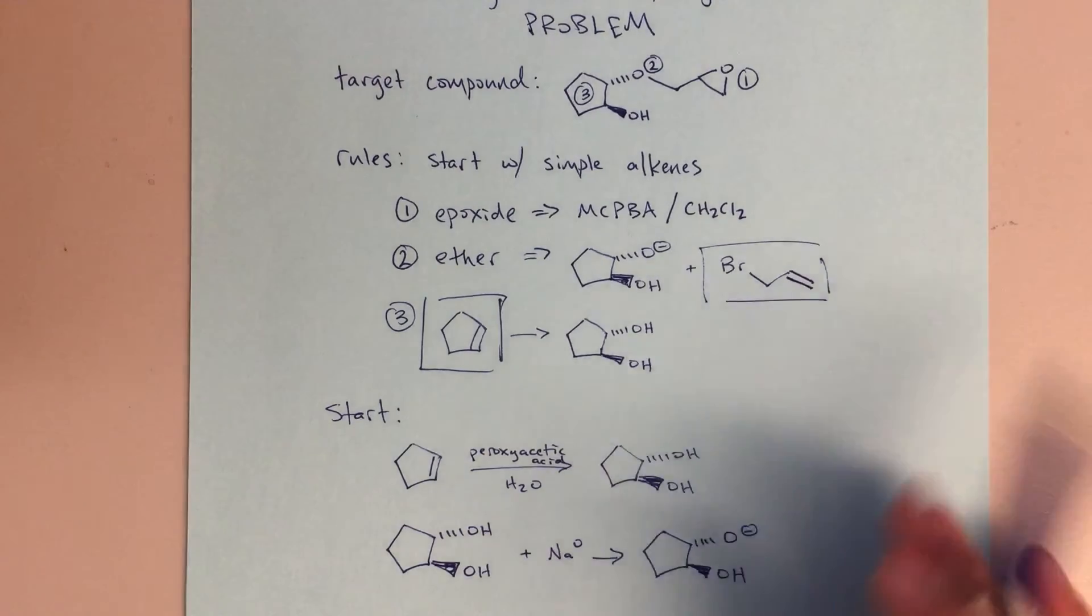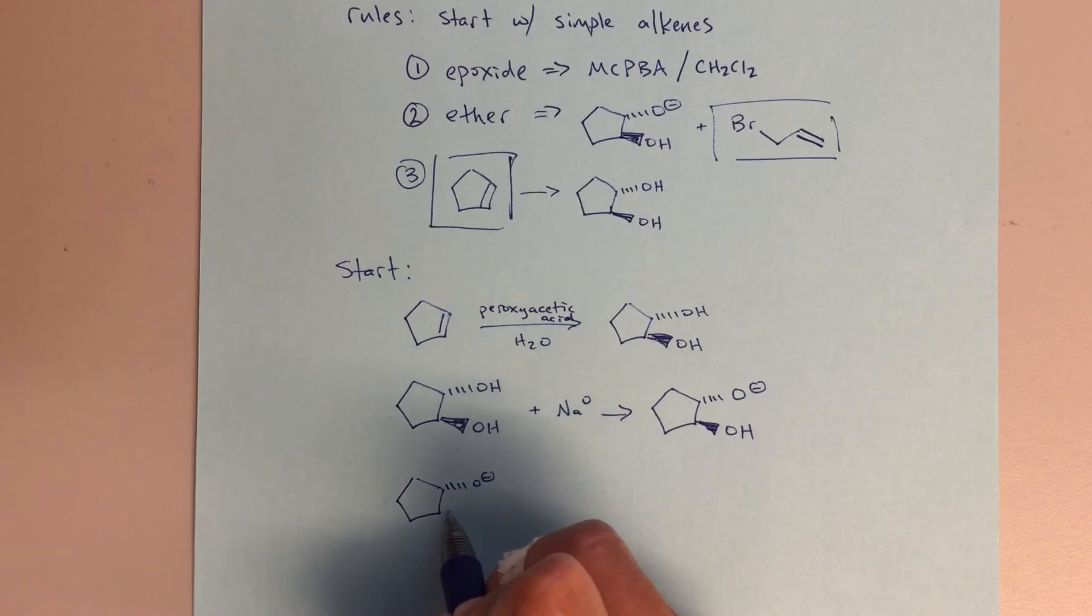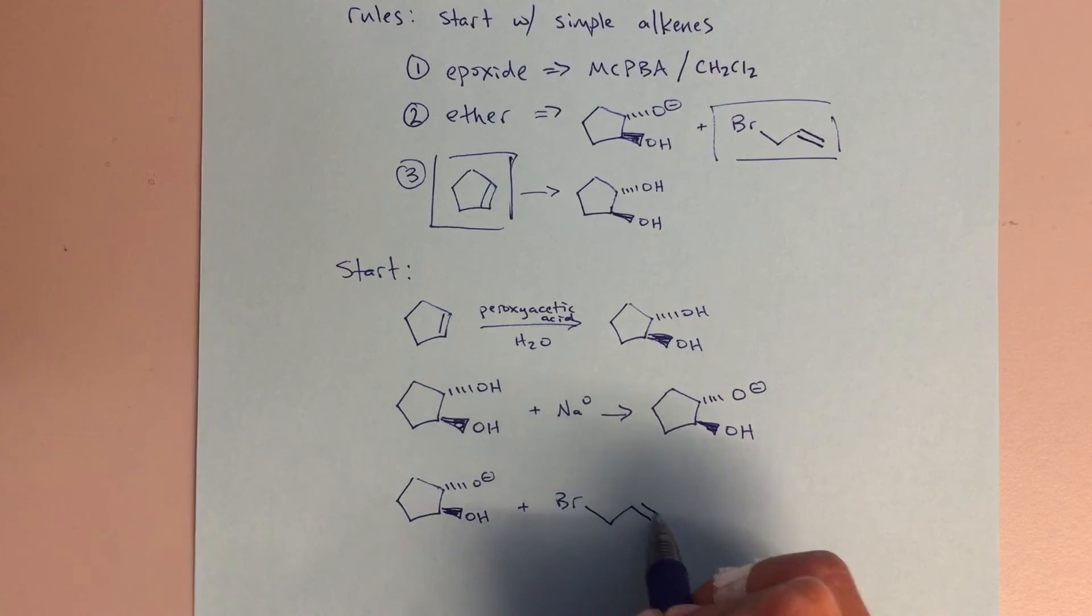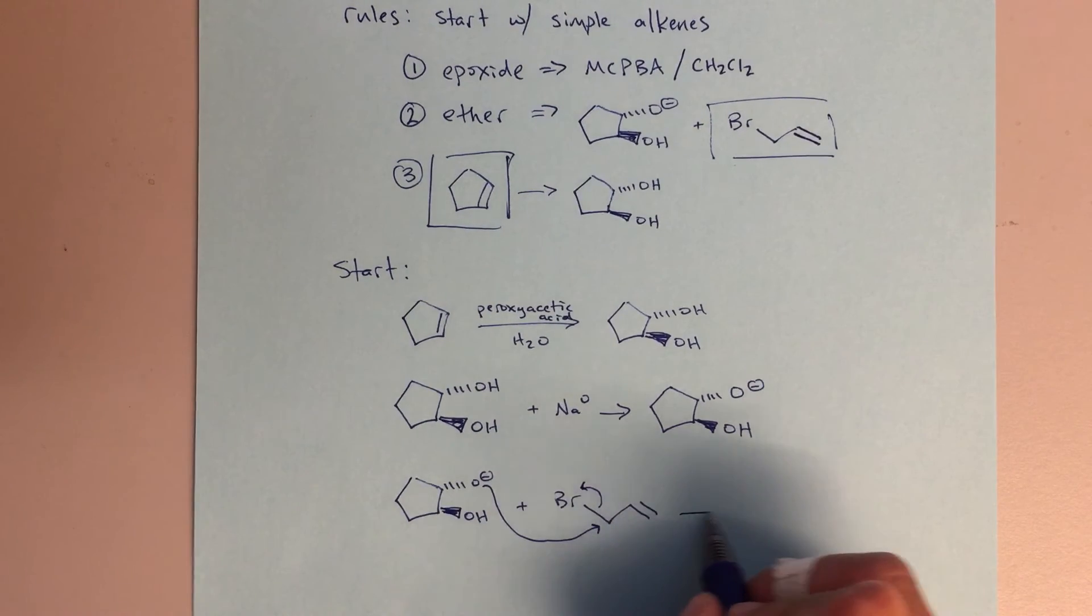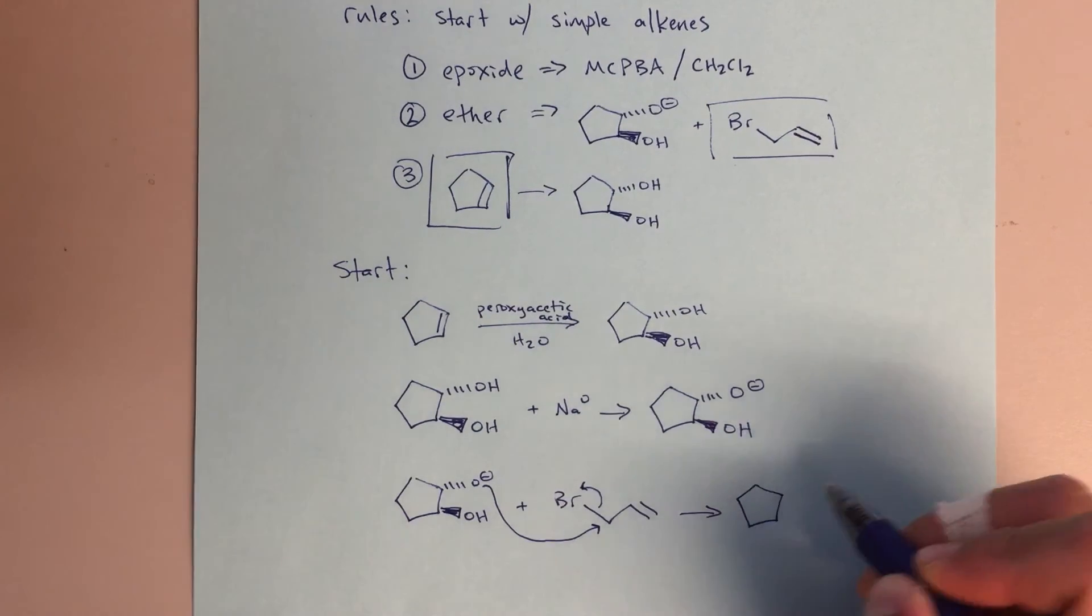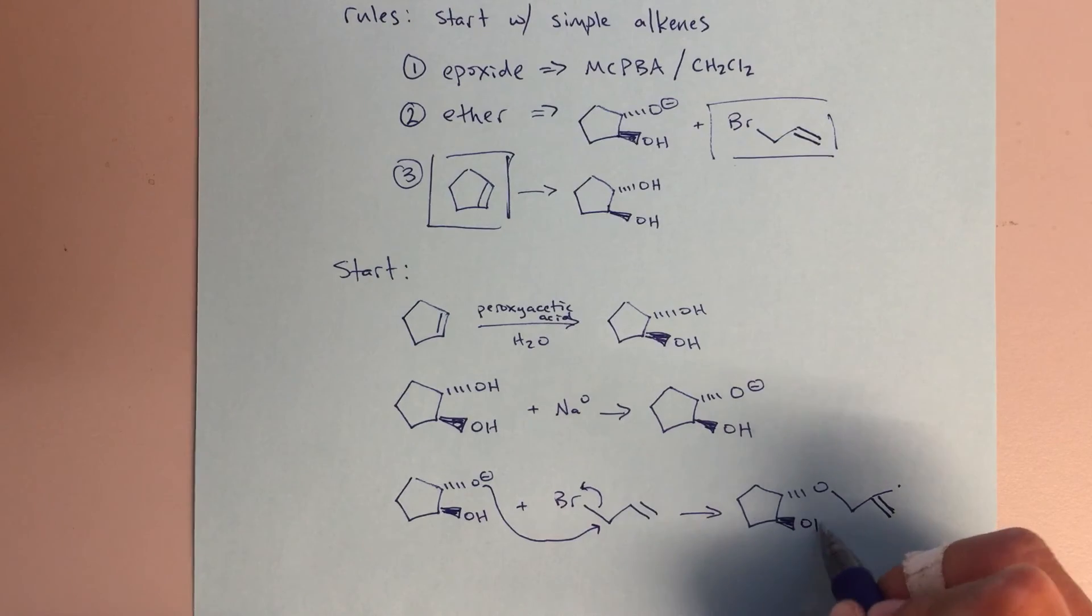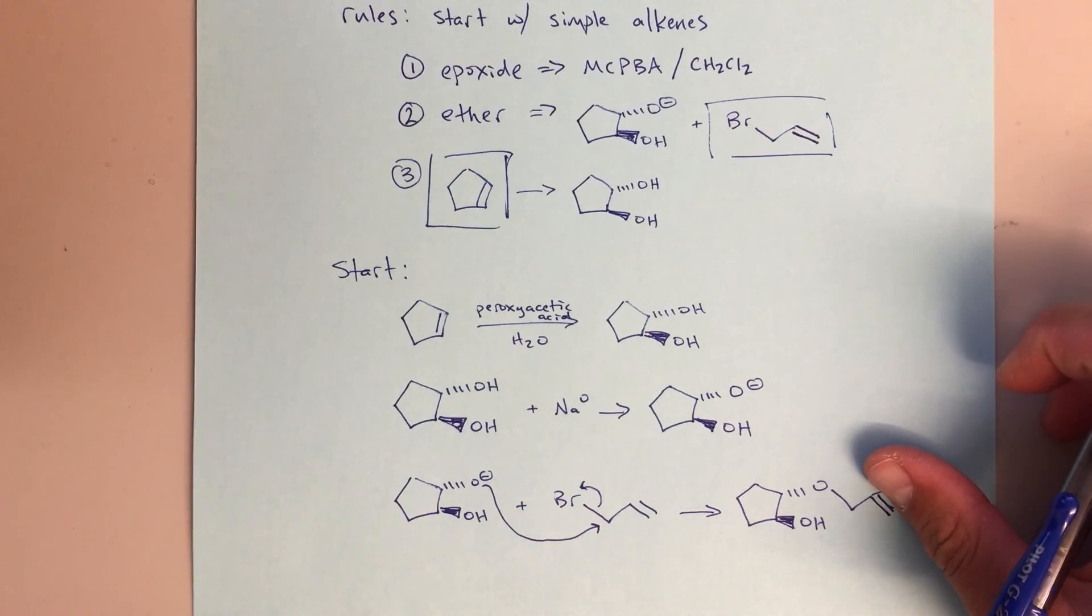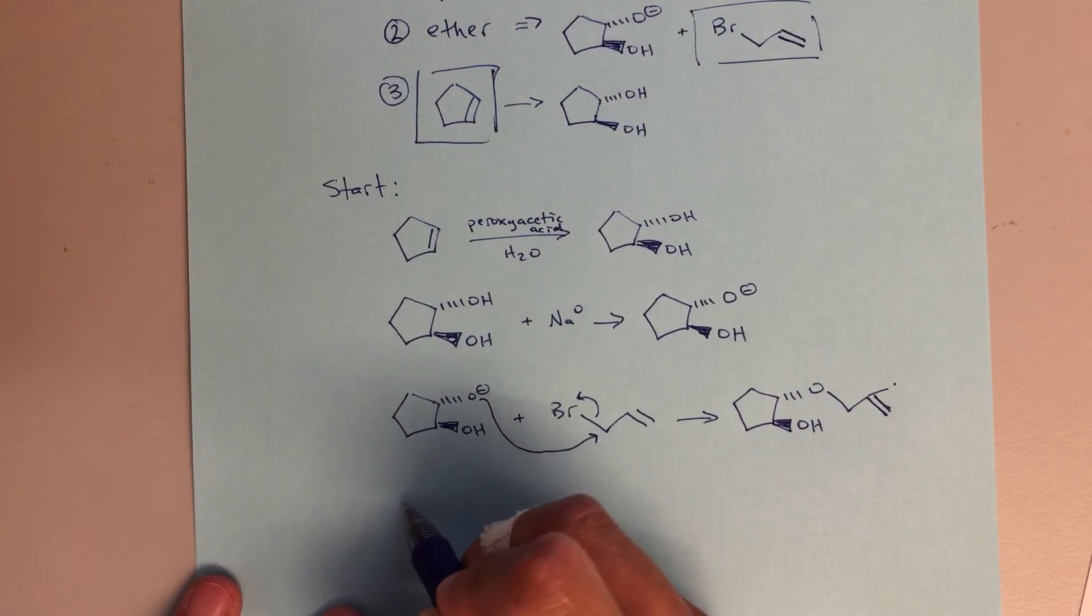This is what we want to use for our SN2 reaction. Here we're going to do a backside attack kicking off the bromine as a leaving group. Now we're getting pretty close. We've still got our alkene here, we've done the formation of our ether. Then the last step that we need to do is just make that epoxide, so convert that into an epoxide.